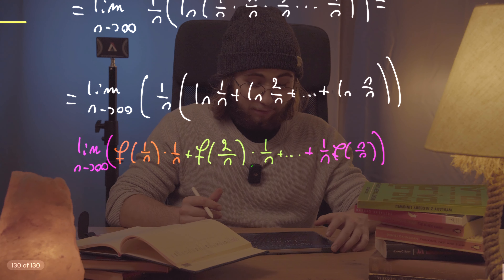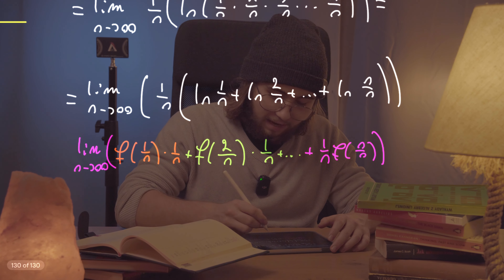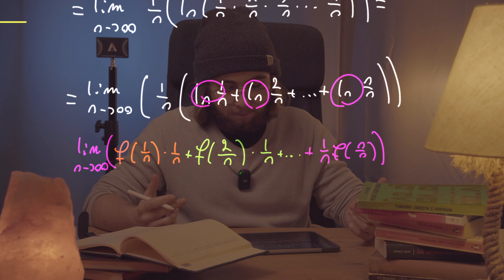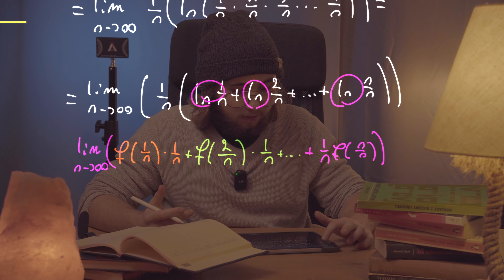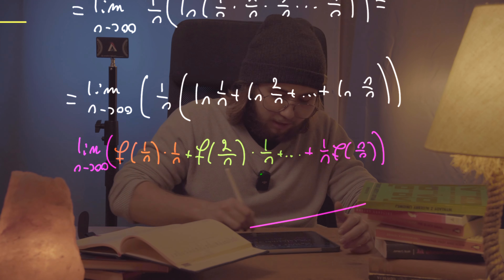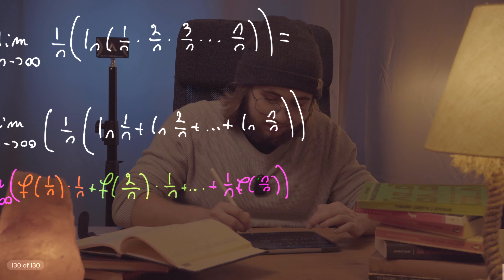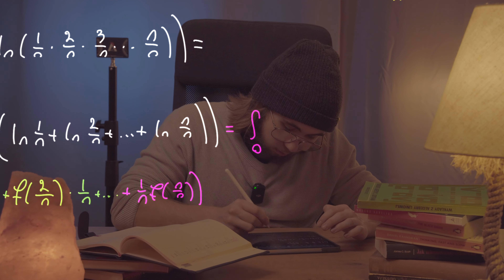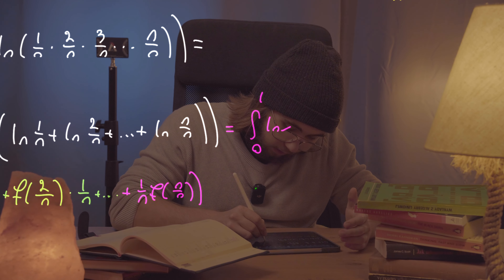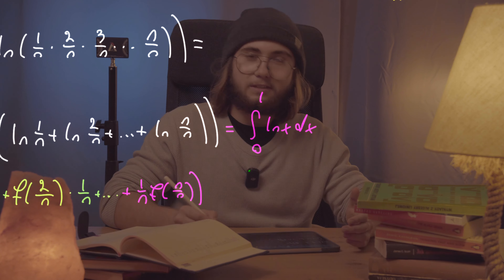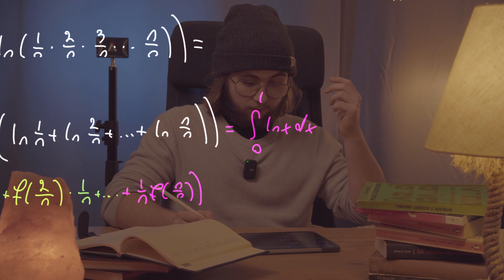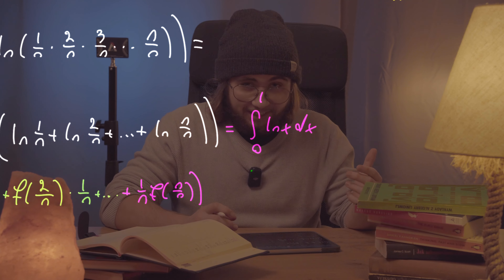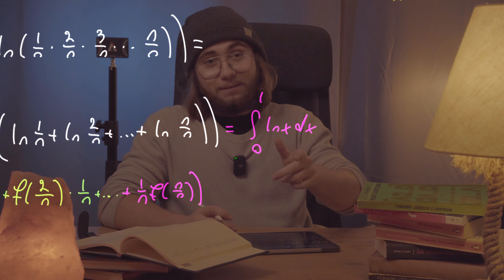The difference is that instead of a generic f, I have the natural log. So using the Riemann sum interpretation I just established, I can write this entire thing as just the integral from zero to one of ln(x) dx. That's something you didn't see coming!